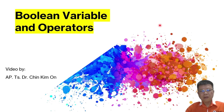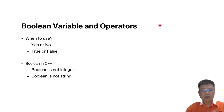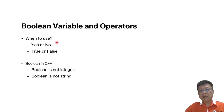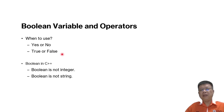Hi all, in this video we are going to learn about boolean variables and operators. Before you use boolean, you have to identify whether it is suitable for your program. When we use it, we usually look at conditions — whether it is yes or no, whether it is true or false. If there are such conditions, then you can use boolean.